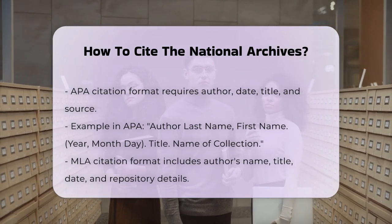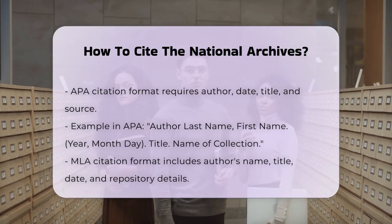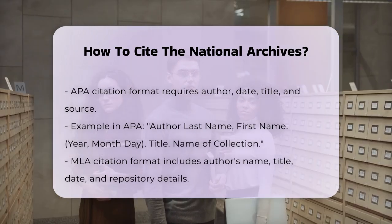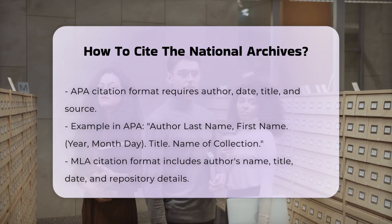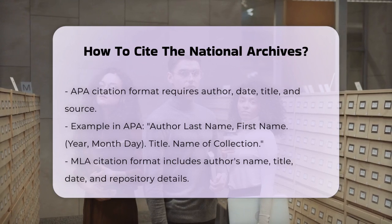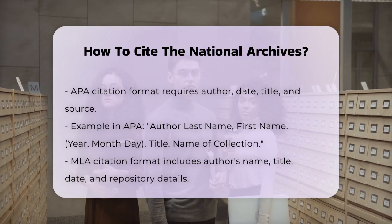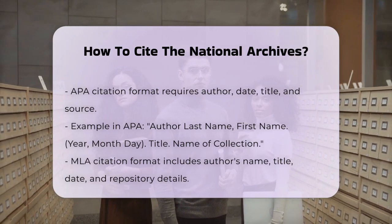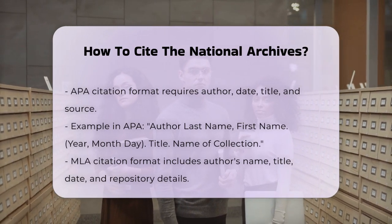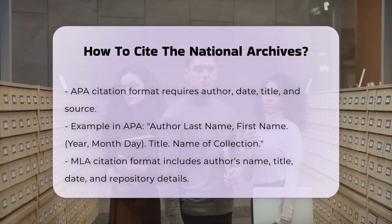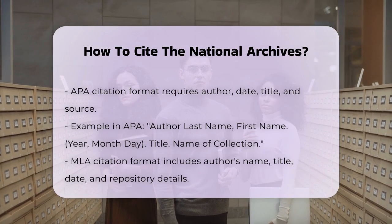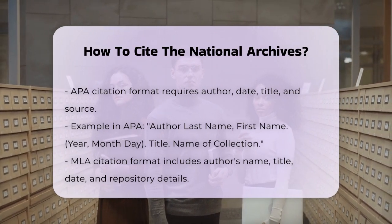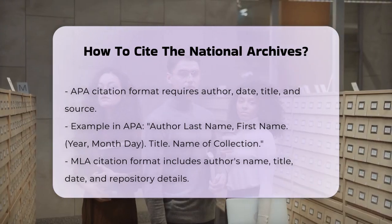When using APA style, the format is a bit different. You'll need the author (if available), the date, the title or description of the material, and the source. For instance: Author Last Name, First Name. (Year, Month Day). Title or description of material. Name of collection, call number, box number, folder number, name of repository, location of repository.